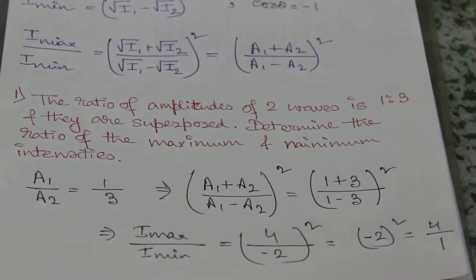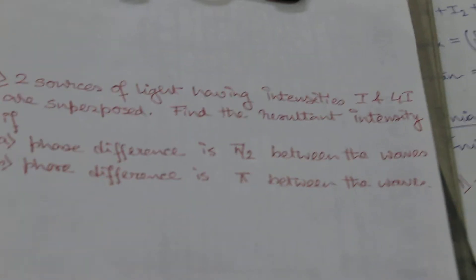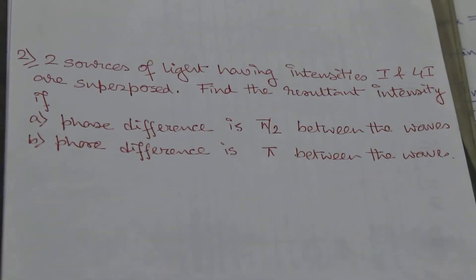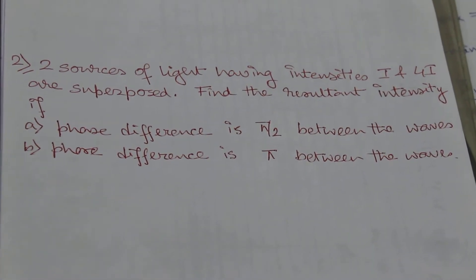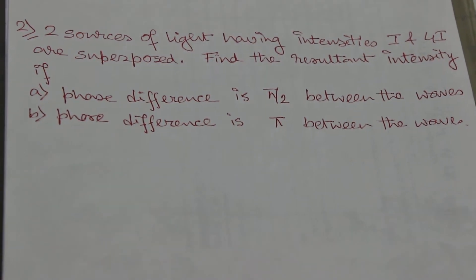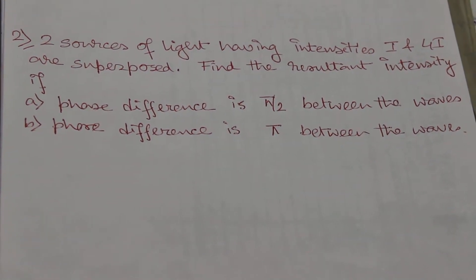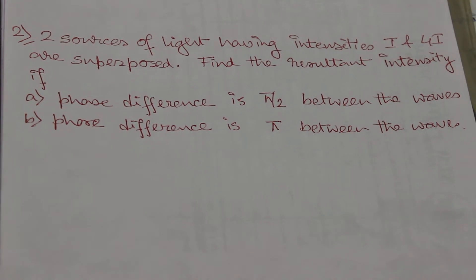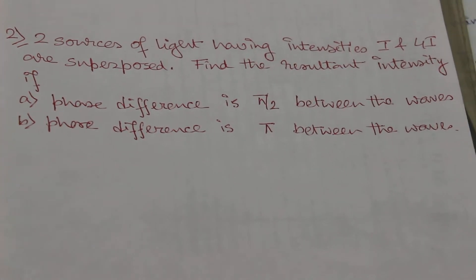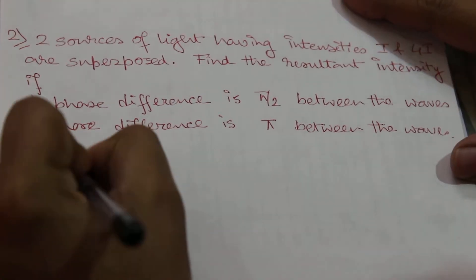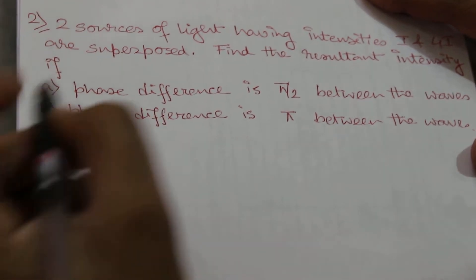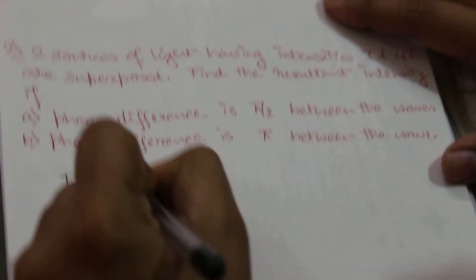Moving on to the next example: two sources of light having intensities i and 4i are superposed. Find the resultant intensity for two cases — first, when the phase difference is π/2, and second, when the phase difference is π. Using the formula: I_resultant = i1 + i2 + 2·√(i1·i2)·cos(theta).